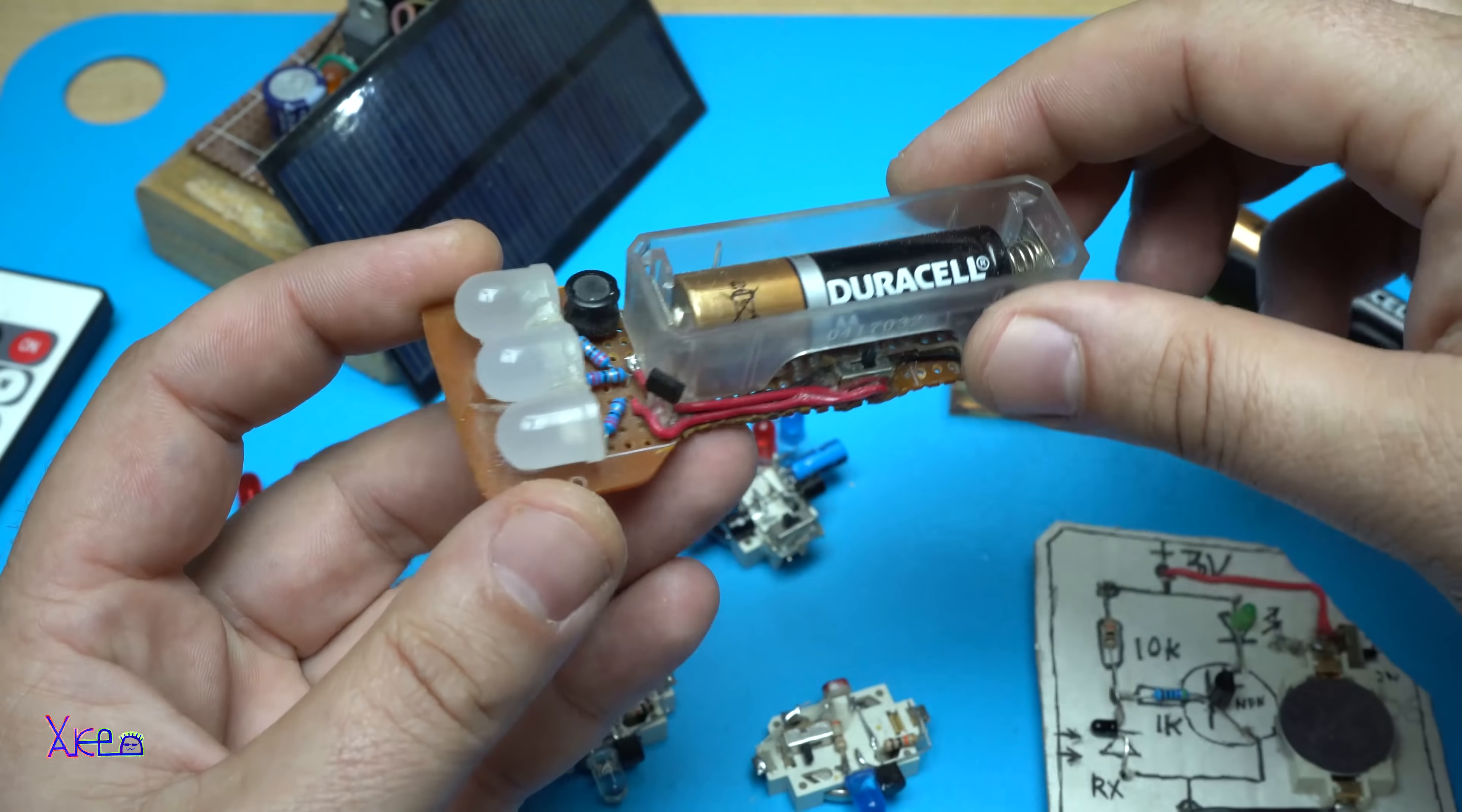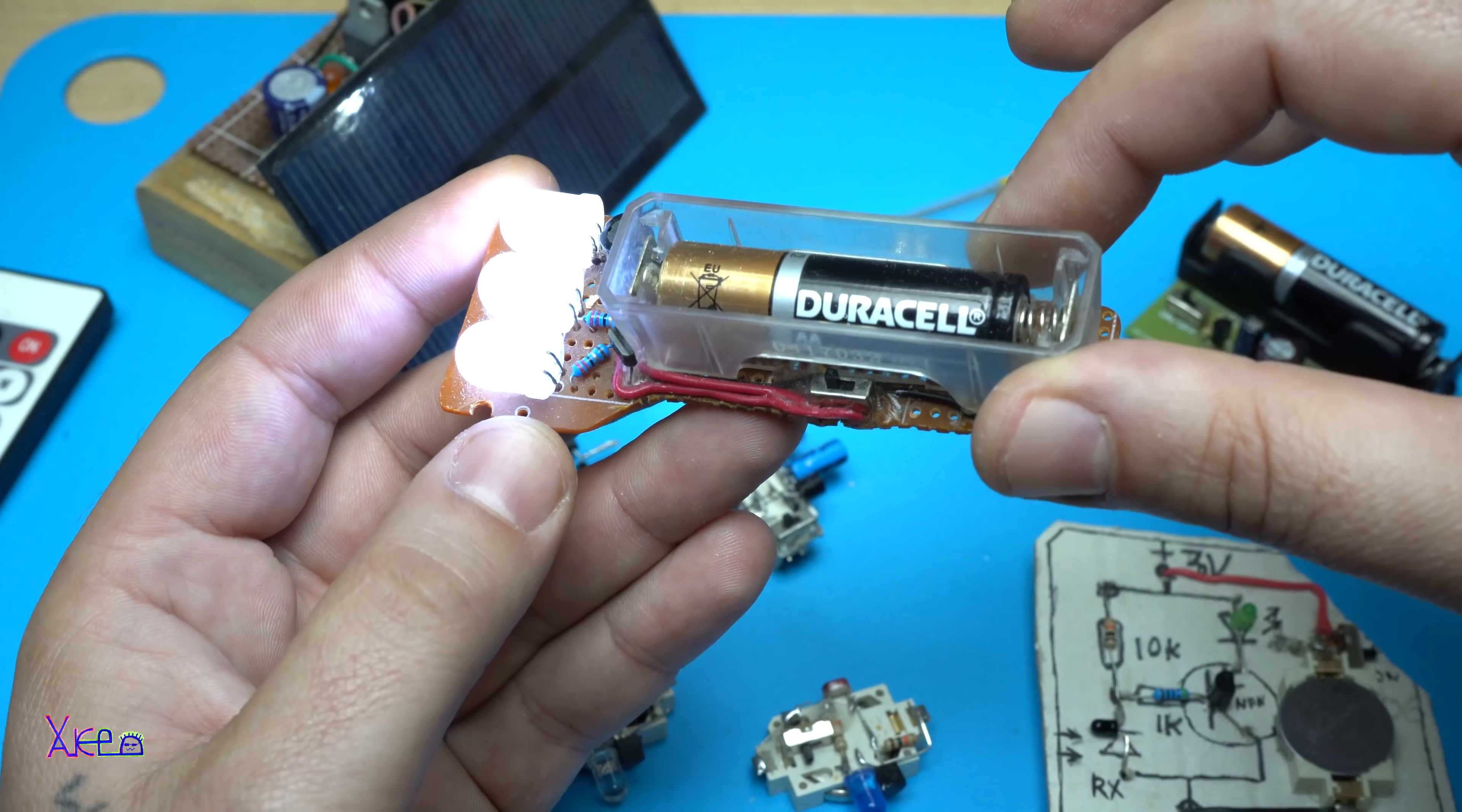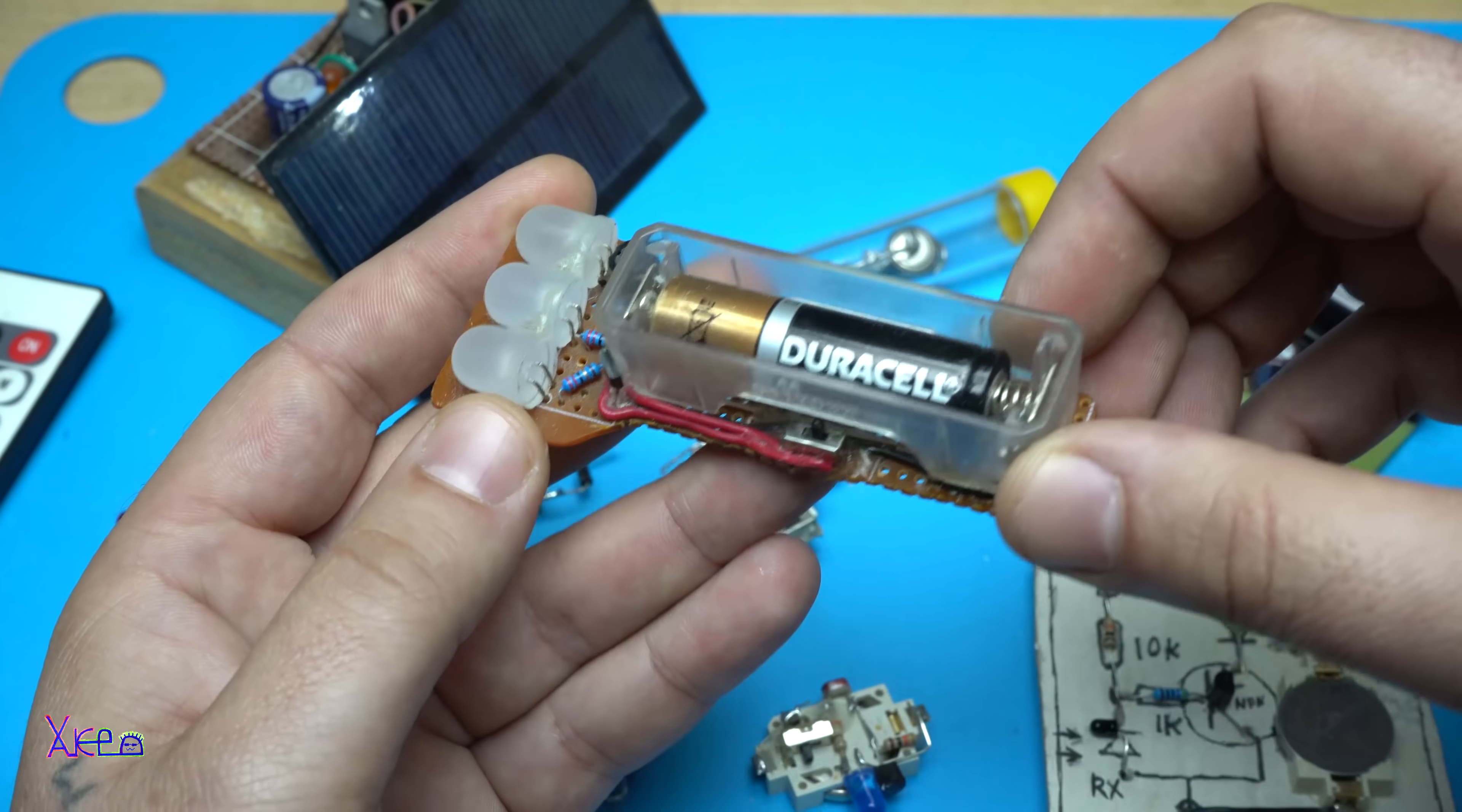The first one is this zombie flashlight. Why is it called a zombie flashlight? Because it has a joule-thief circuit that boosts the voltage just enough to light up the LEDs, and it works with almost dead batteries. To mention that all these gadgets I will present, there are links below in this video. You can check them with full instructions.